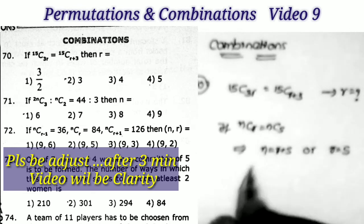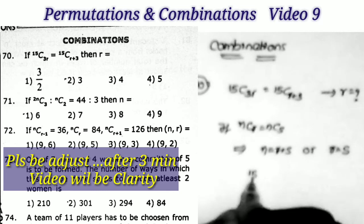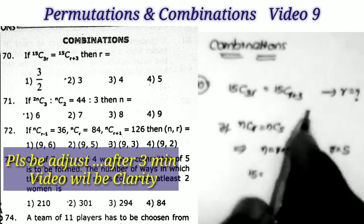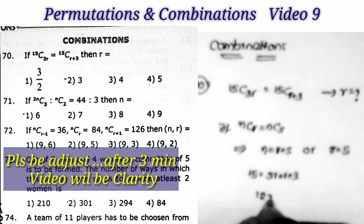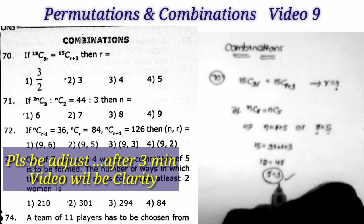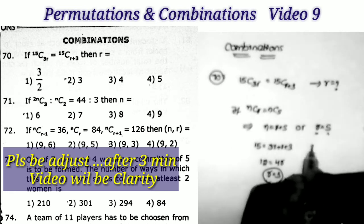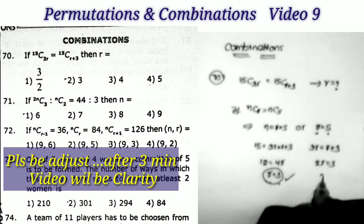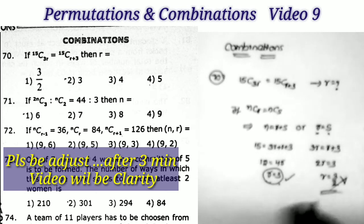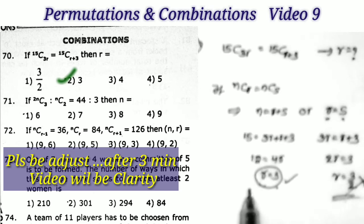Applying the first formula: n = 15, so 15 = 3R + (R + 3), which gives 12 = 4R, therefore R = 3. Applying the second condition: 3R = R + 3, so 2R = 3, R = 3/2, which is a fraction — we don't take this value. Therefore the value of R is equal to 3, which is the second option.